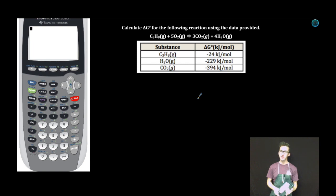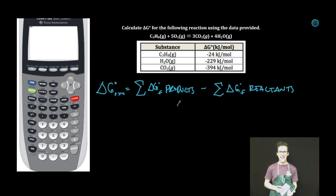Let's do a quick Gibbs free energy calculation here using Gibbs free energies of formation. Calculate delta G for the following reaction using the data provided. Again, we're provided a series of Gibbs free energy changes of formation, so we're just going to use the following formula. Plug and chug.